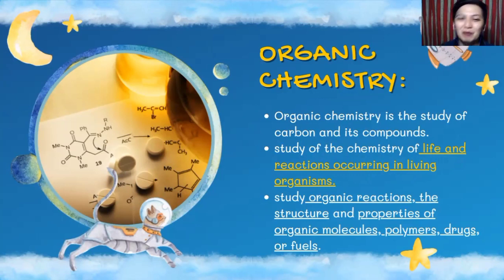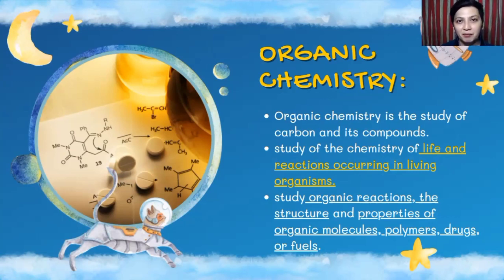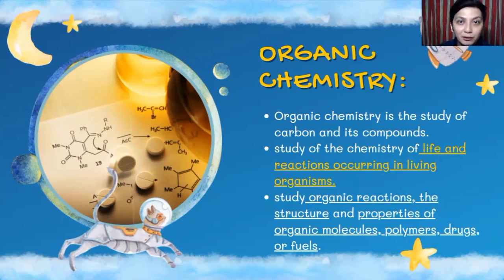Organic chemistry is also the study of organic reactions, the structure, and properties of organic molecules or compounds like polymers, drugs, or fuels — like the byproducts of different living things, like plants, eggs, and milk. Those are the different compounds that we are familiar with, and that is also under organic chemistry.